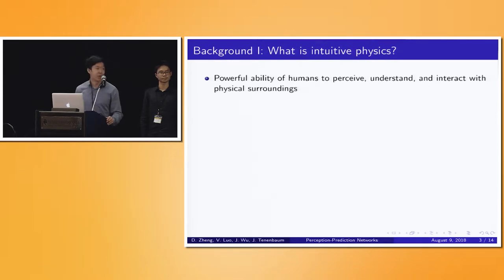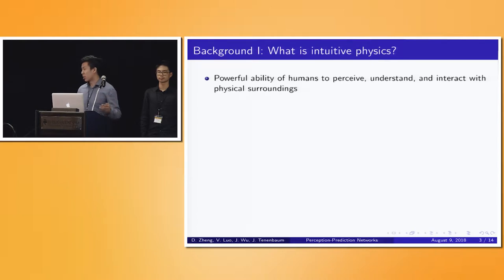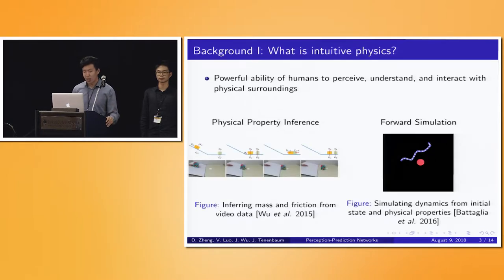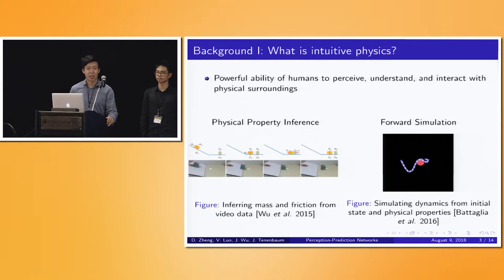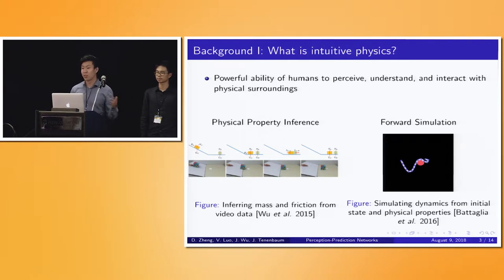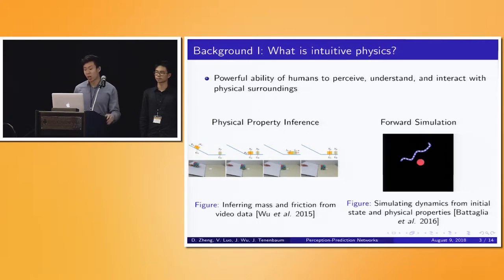A quick background on intuitive physics. Intuitive physics has to do with the idea of replicating the human ability to perceive, understand, and then later interact with its physical environment. Humans are good at many such tasks in the field of intuitive physics, but we're going to look at just two of them today. On the left here we have physical property inference, which has to do with taking in as input video data of observations — such as a box rolling down a ramp. This video data can come in the form of a sequence of images or a sequence of position and velocity vectors for each object.